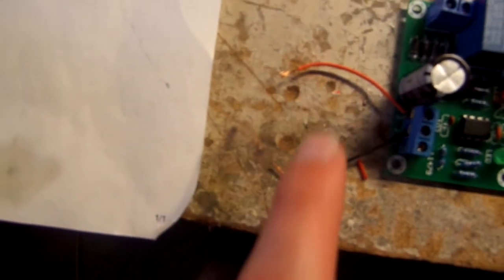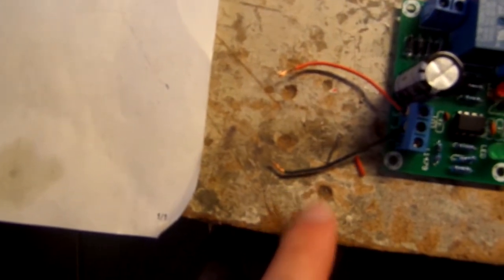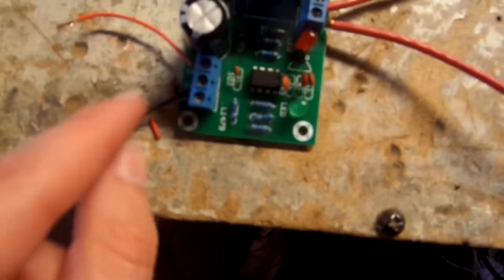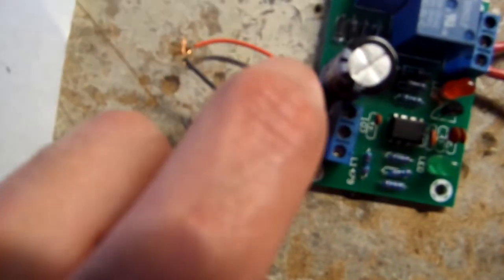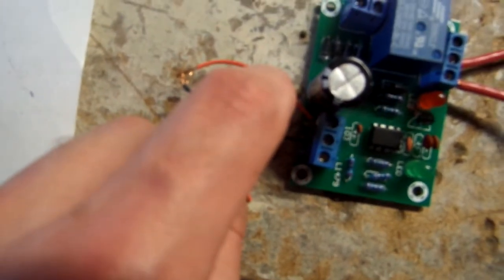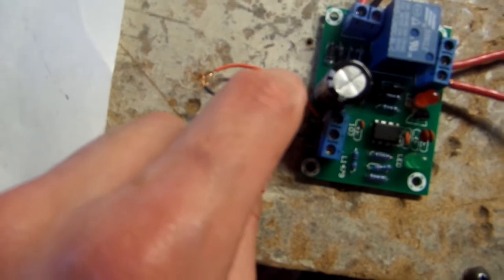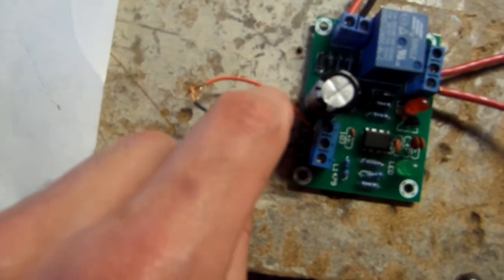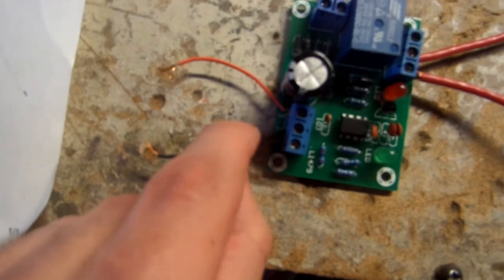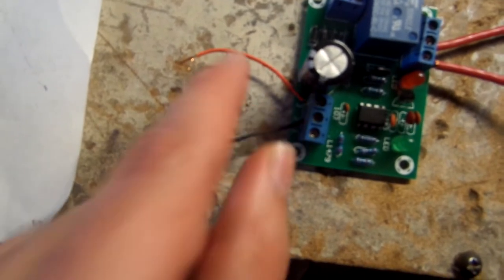So basically these two connections here, these just connect to the positive and negative connection on the spark plug that I showed on the boiler in the last video. That's all these do. So when this circuit is completed by the water, then the pump will cut off. And when the connection is broken, meaning there's no water there in the boiler, the pump will kick back on.